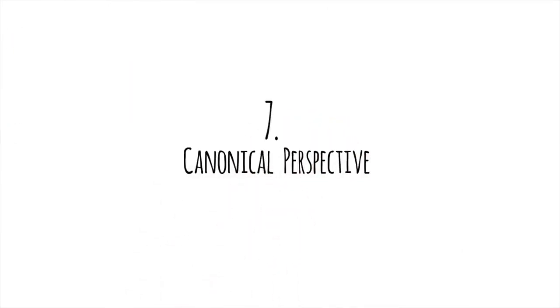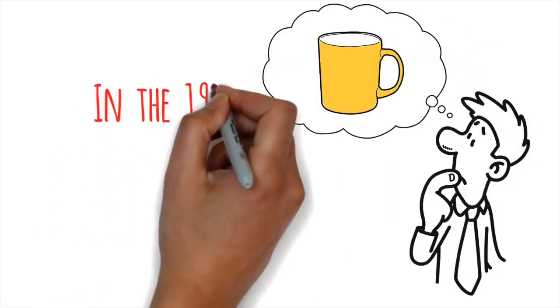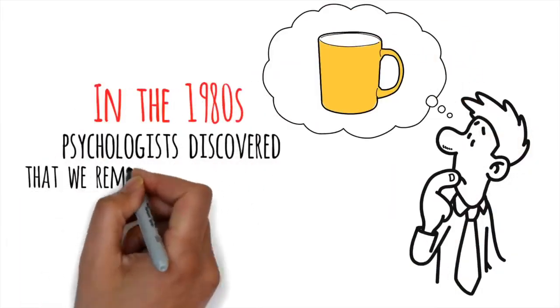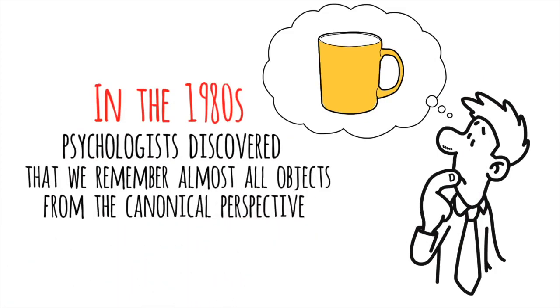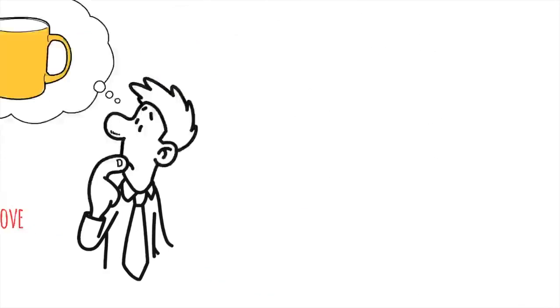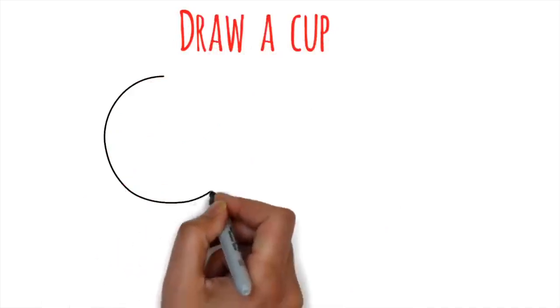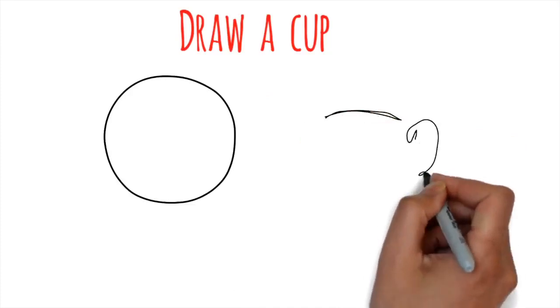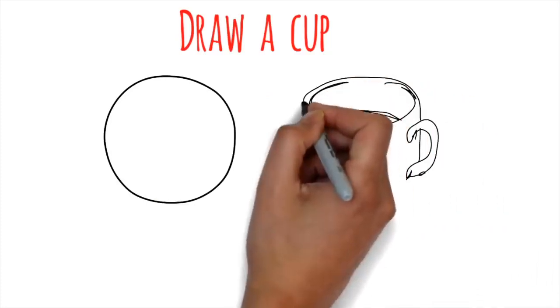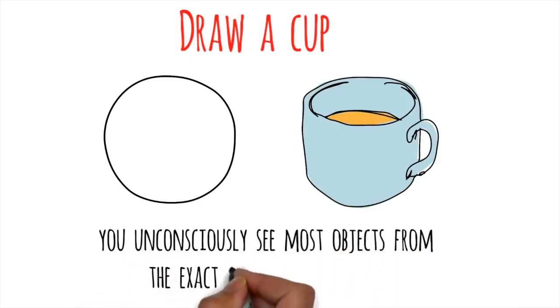Number 7. Canonical perspective. Have you ever thought about how things look in your memory? In the 1980s, psychologists discovered that we remember almost all objects from the canonical perspective. That means we see things from the side and slightly above. If you don't believe me, try it. Draw a cup. Did you draw one circle as though you were looking down on it? Or did you draw it from the side and add an angle so you could just barely see inside? While there are a few individual exceptions, you unconsciously see most objects from the exact same vantage point.